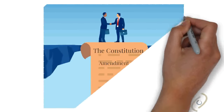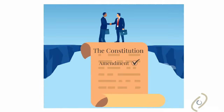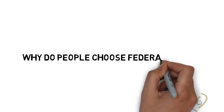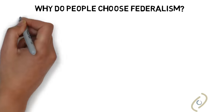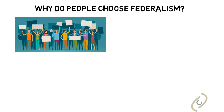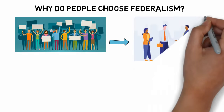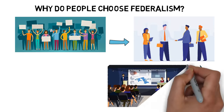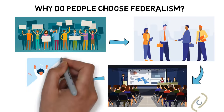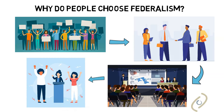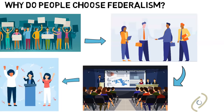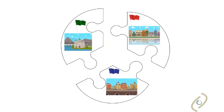In federalism, the federal government cannot take away or change the power of constituent units without their consent, usually involving a constitutional amendment. Federal countries, also called federations, are usually the product of historical events and the unique result of choices by the citizenry and political leaders.